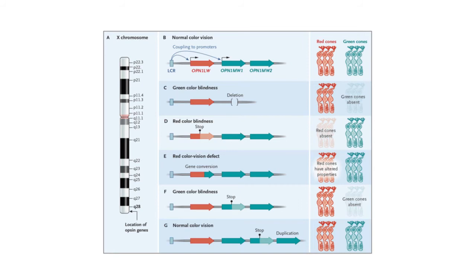Look at F and G for green colorblindness. If we have a stop codon in the middle of a green gene and it's the first one in the array, that person will have green colorblindness. But if that same stop codon is in the second gene in the array, the person has normal color vision because the first green gene in the array is the one that's functional. Some interesting defects occur when there are actual exchanges within the red and green genes to produce hybrid genes, which are part red and part green. Those individuals are not able to distinguish red and green very well, and the proteins produced have slightly different absorption properties from wild type.